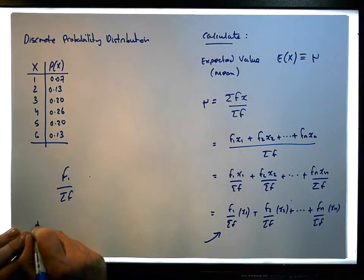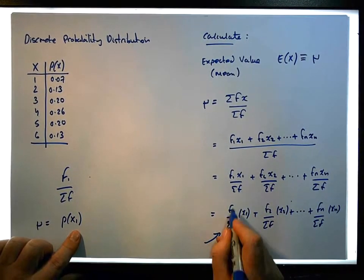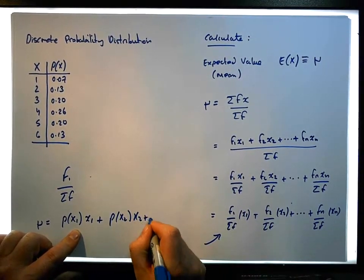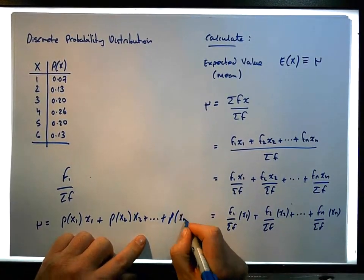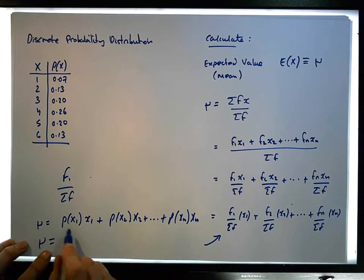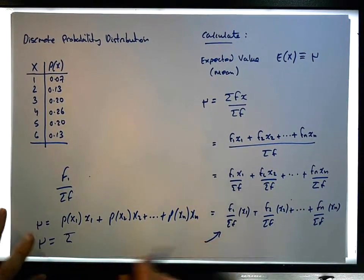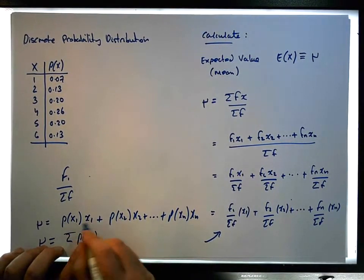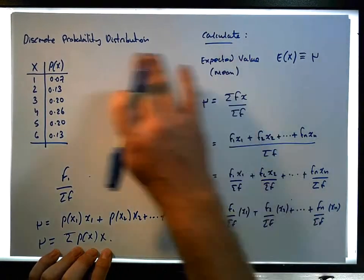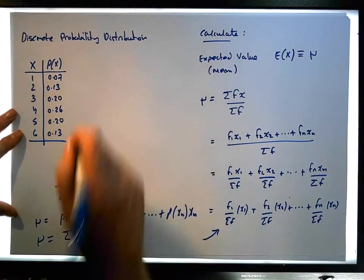The formula reduces so that μ equals the probability of x₁ times x₁, plus the probability of x₂ times x₂, all the way to the probability of xₙ times xₙ. From a summation perspective, μ equals the sum across all outcomes of the probability of x multiplied by x — which is exactly the formula for the expected value of a probability distribution.